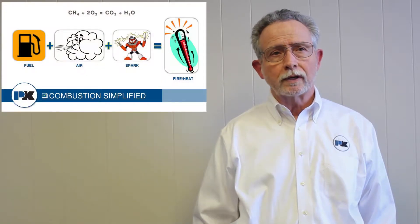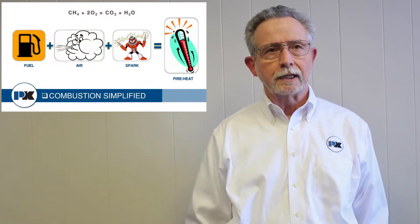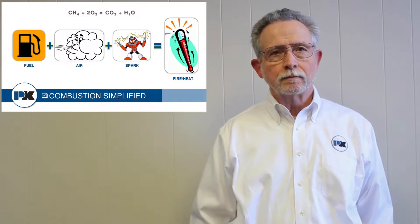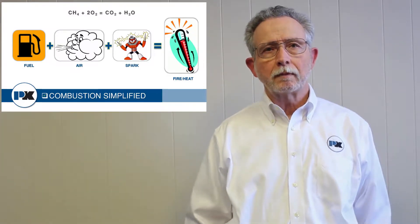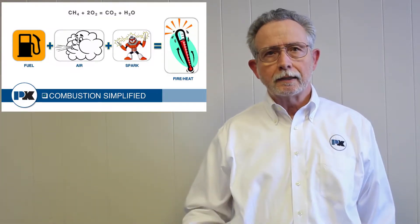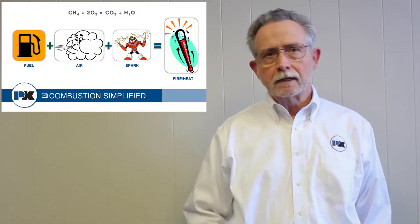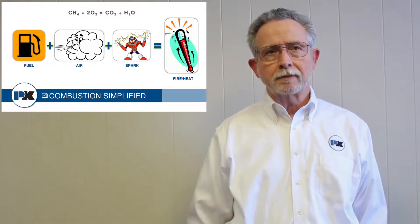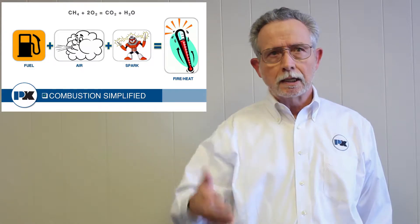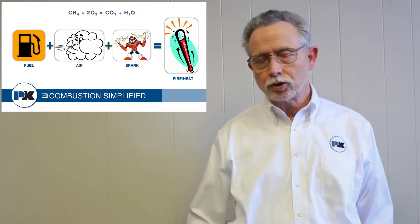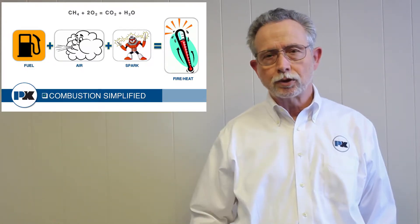First we're going to look at what's behind turndown. The first thing we need to understand is what is combustion. We're going to take fuel, add air, create a spark, and that gives us fire or heat. That's a very simplified version — basically natural gas plus a little O2 creates some CO2 and water vapor.